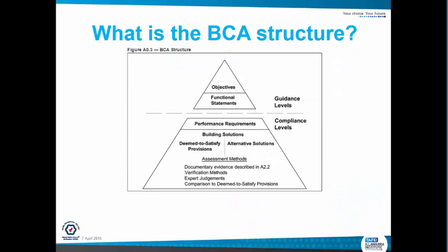So what is the structure? Figure AO3, the BCA structure, shows a pyramid. At the guidance levels at the top we have the objectives and the functional statements. Below those are compliance levels which are performance requirements. For those performance requirements to be met we have to use building solutions — we have one of two: the Deemed-to-Satisfy provisions or DTS, which is acceptable construction, and then you also have the alternative solutions, which is a different way of building.